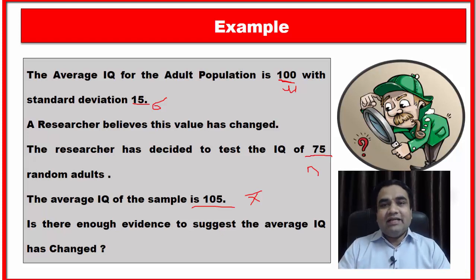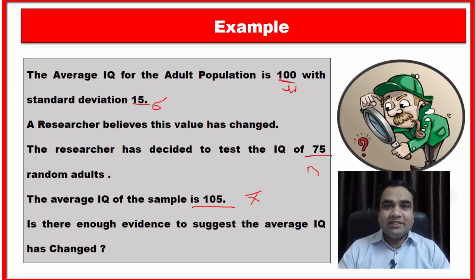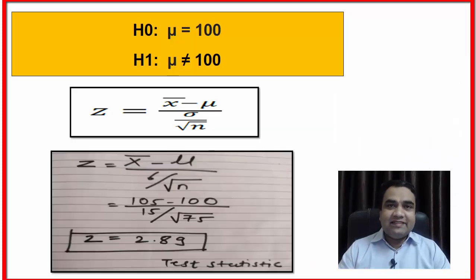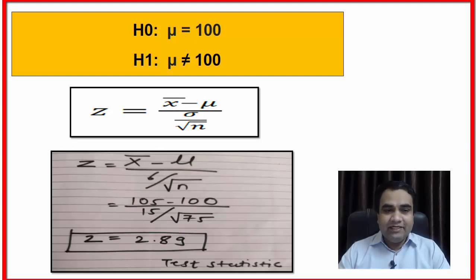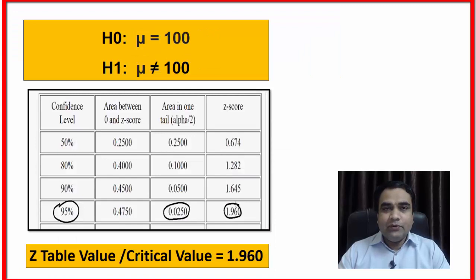The question is: which test statistics is suitable for this example? Since the sample size is more than 30 and we know the population standard deviation, we select the z test. Putting all values into the z formula, the calculated z value equals 2.89. Our null hypothesis is mu equals 100, and our alternative hypothesis is mu is not equal to 100.